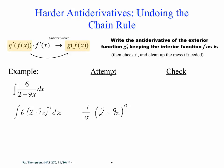Why? Because 2 minus 9x to the 0 is just 1, so you lose your function. And also, what's 1 over 0? Undefined. So it's like the warning bells are going off here — something's not right. We just lost our x, we lost our function, plus we're trying to do 1 over 0 which doesn't exist. So this is the exception to the power rule.